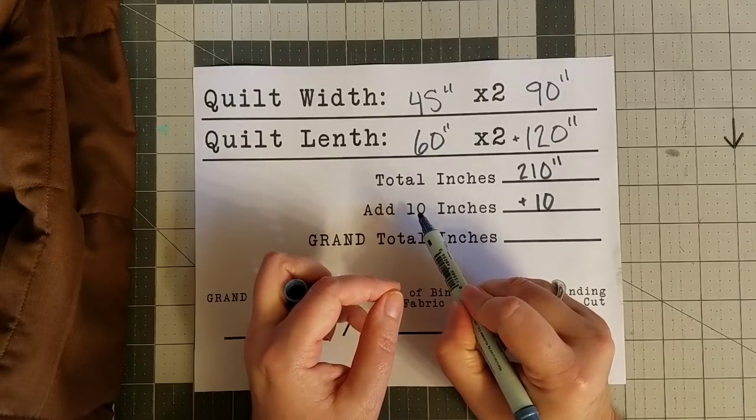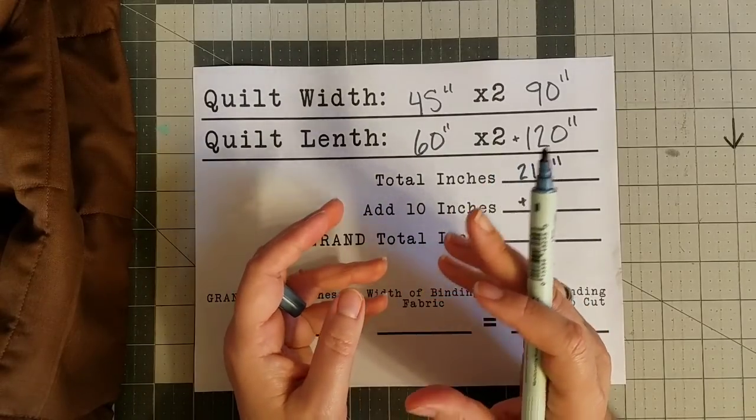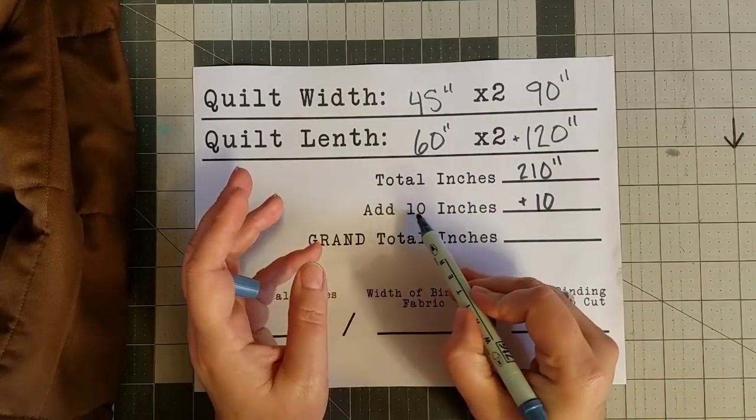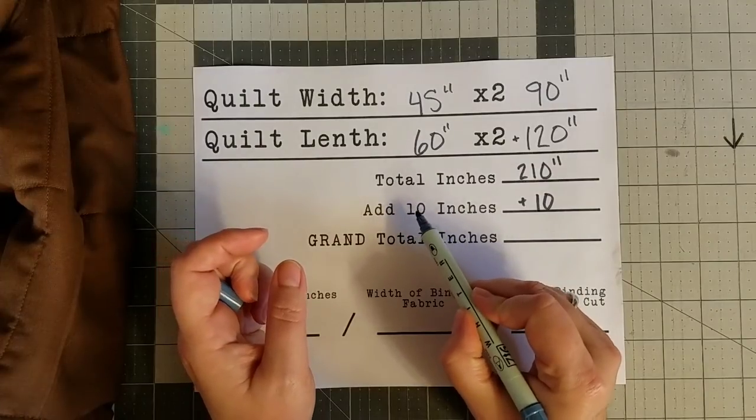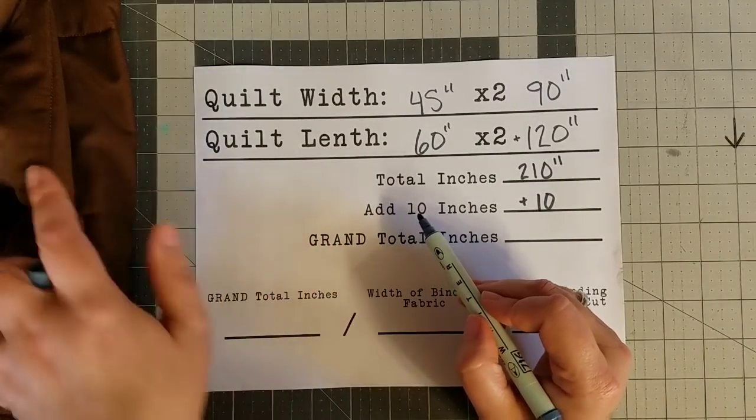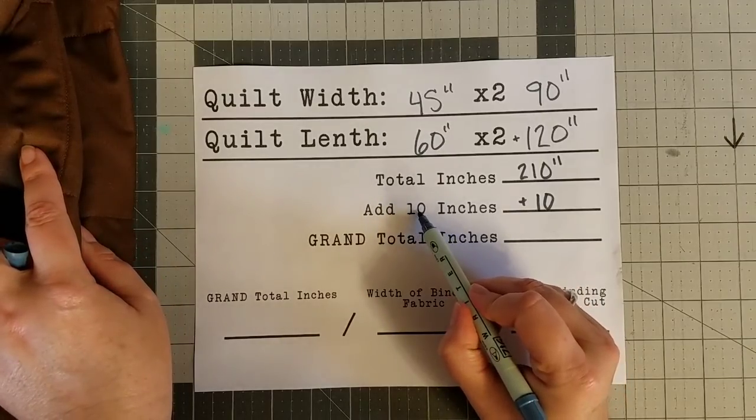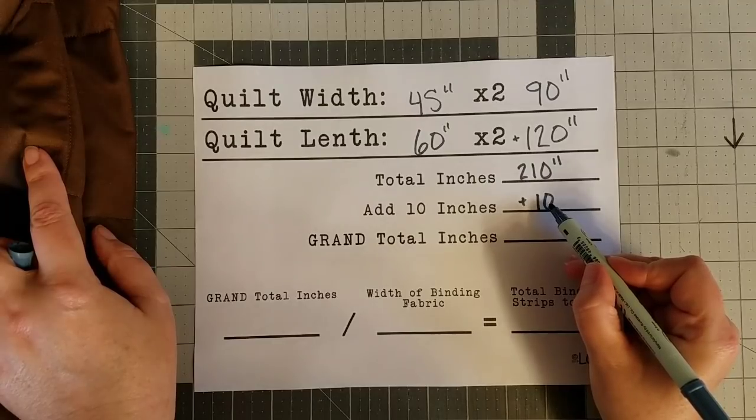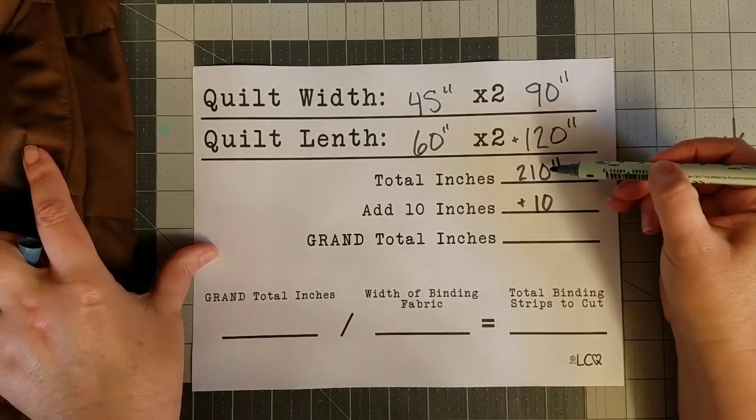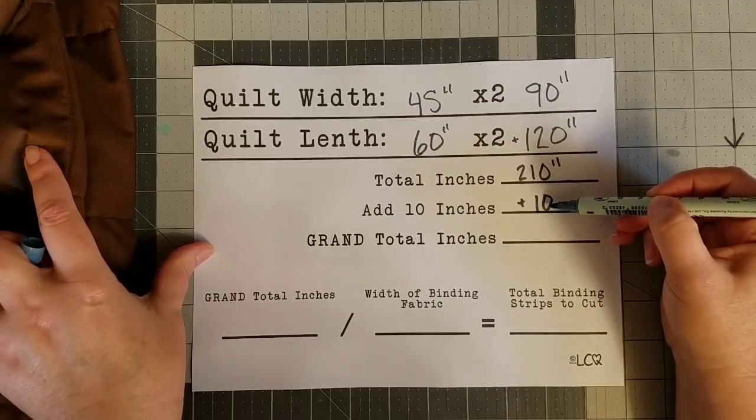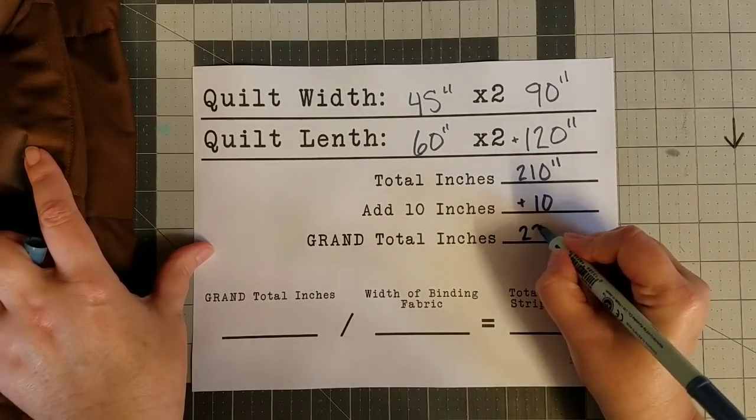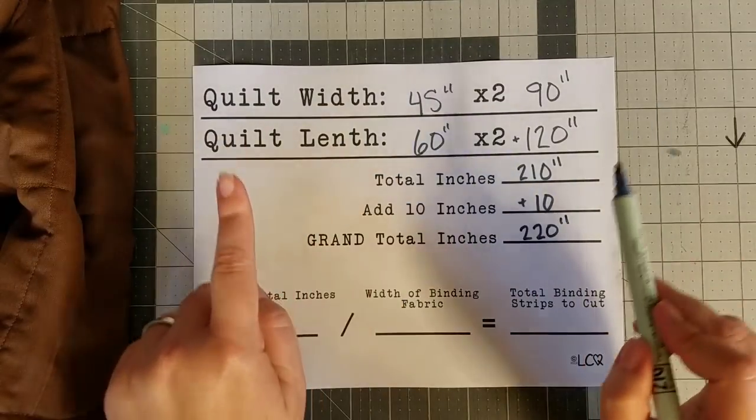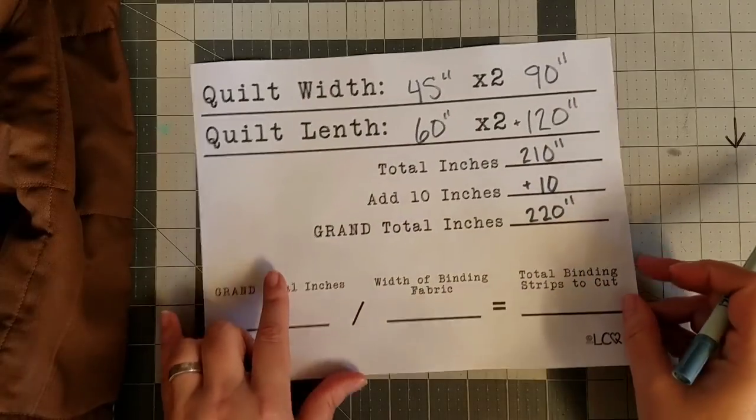So I like to add about 10 inches if I'm doing a bigger quilt. If I'm doing a smaller project like a mug rug or maybe just a small wall quilt or something like that, you could reduce this number to maybe like five or six inches. But if I'm doing a bigger size quilt, I usually add 10 inches. So we're going to add the 10 extra inches to give ourselves some working room, and we're going to then add the total inches and our 10 inches, which brings us to 220 inches as the grand total inches of the perimeter of our quilt.